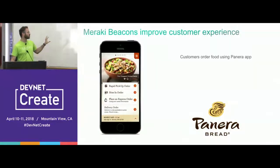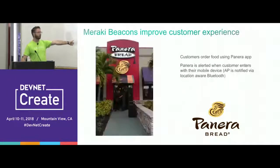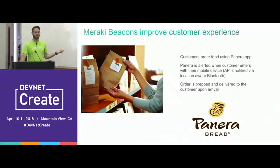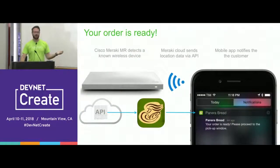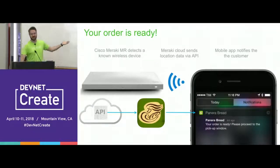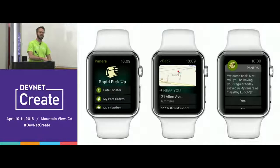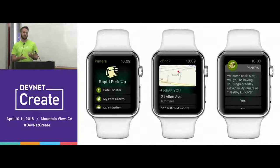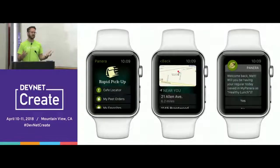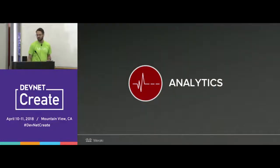Subway also showed that people who connect to Wi-Fi come back more often. Panera had a great use case: a customer downloads the app, orders food, and is alerted when they enter the store — they walk in and get notified to pick up their order at the window. Panera also launched an Apple Watch app so you can order on your watch. Both Wi-Fi and Bluetooth are technologies that should be invisible to that guest experience, and that's really where mobile apps come in.